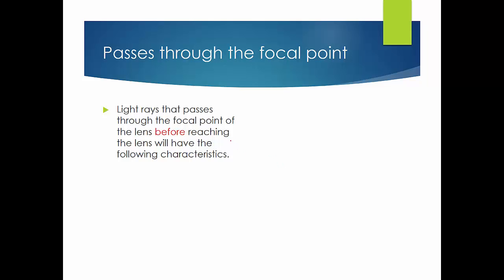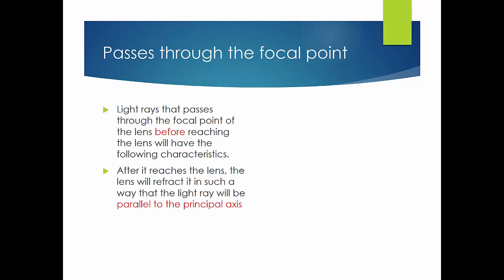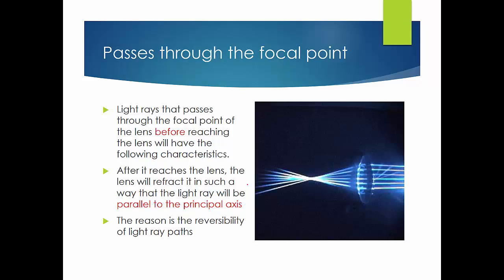The third light ray passes through a focal point before reaching the lens. After it reaches the lens, it will be refracted so that it travels parallel to the principal axis. The reason is the reversibility of the path of light. If a light ray can travel from A to B in a certain manner, it means it can travel from B back to A along the same path.